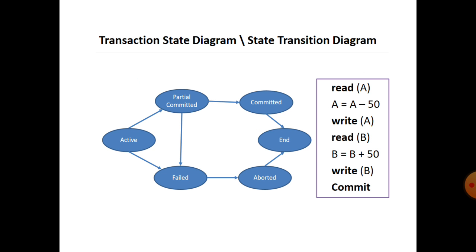The transaction state diagram shows the possible states. The first cycle is: Active → Partially Committed → Committed → End. The second cycle is: Active → Partially Committed → Failed → Aborted → End. The third cycle is: Active → Failed → Aborted → End. There are three types of transaction state flows possible in this diagram.